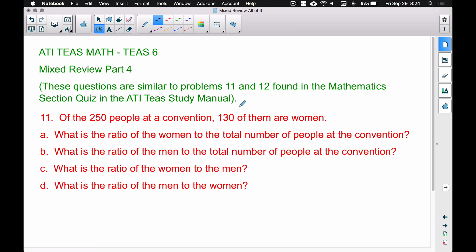Number 11: Of the 250 people at a convention, 130 of them are women. Automatically when I read that before I even read the question, I'm thinking, okay, there's 130 women out of 250 people. If we find the difference between these two numbers, that's going to tell us how many men we have. Therefore, if we subtract these, we get 120 men. That may be useful, it may not be, but that's what's going through my head.